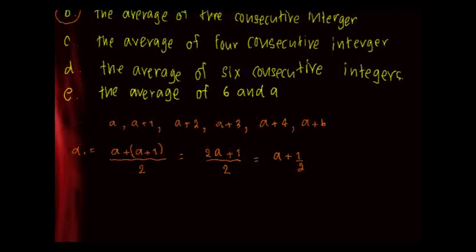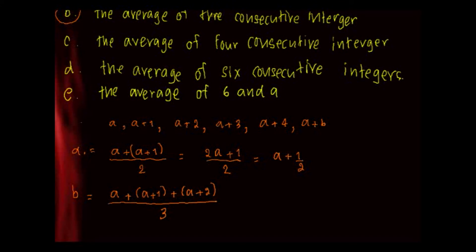And B is three consecutive integers, so we have a plus a plus 1 plus a plus 2 divided by 3, so we get 3a plus 3 divided by 3, equal to a plus 1, right? That's going to be an integer.